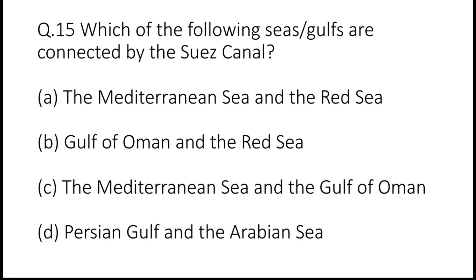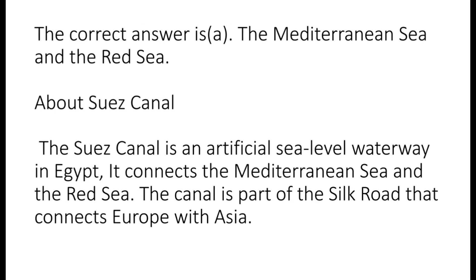Question 15: Which of the following seas or gulfs are connected by the Suez Canal? Options are A: the Mediterranean Sea and the Red Sea, B: Gulf of Oman and the Red Sea, C: Mediterranean Sea and the Gulf of Oman, or D: Persian Gulf and the Arabian Sea. The correct answer is A — the Mediterranean Sea and the Red Sea. The Suez Canal is an artificial sea-level waterway in Egypt that connects the Mediterranean Sea and the Red Sea. The canal is a part of the Silk Road that connects Europe with Asia.